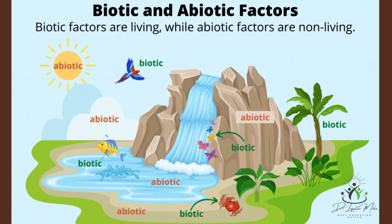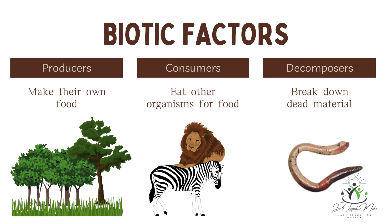Among the biotic factors: producers — plants — play a fundamental role in capturing energy from the sun through photosynthesis to make their own food. Consumers obtain their energy by consuming other organisms, and they can be further divided into herbivores, carnivores, and omnivores.